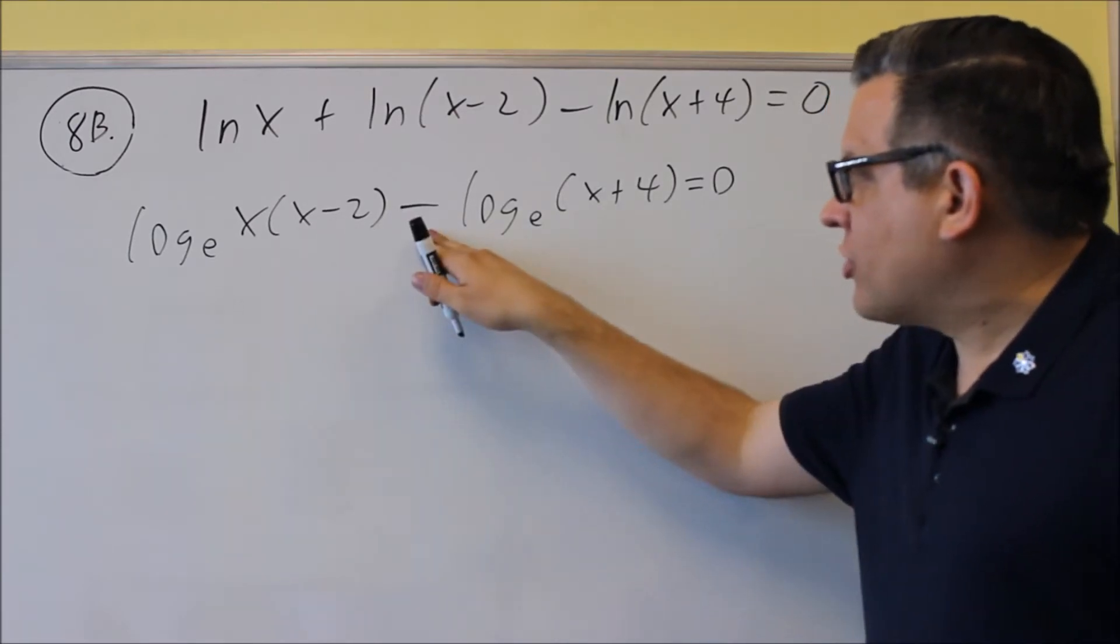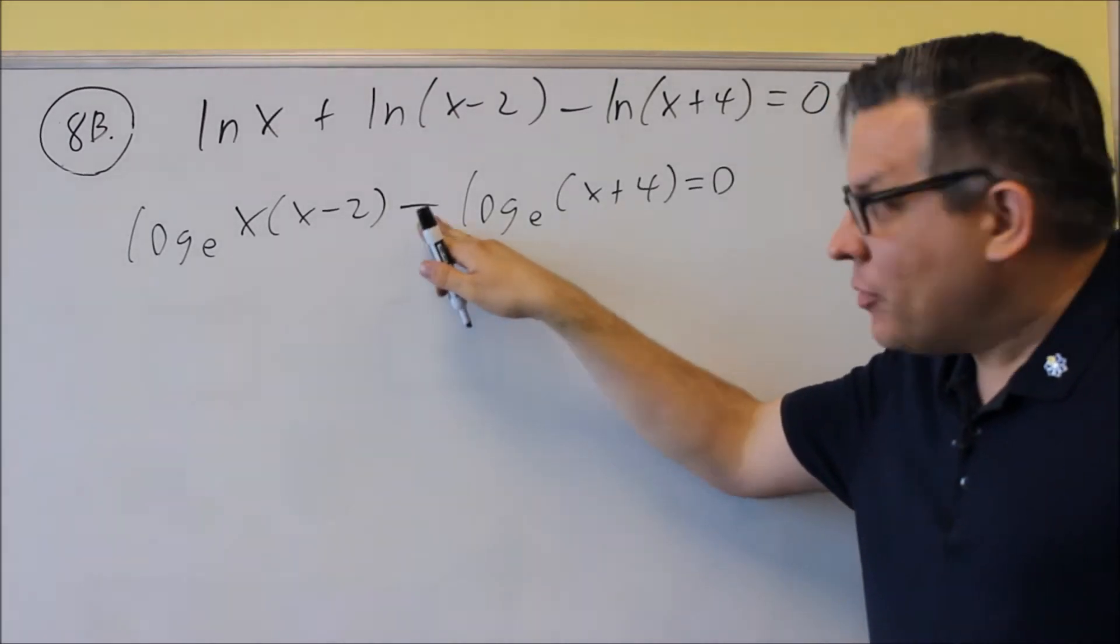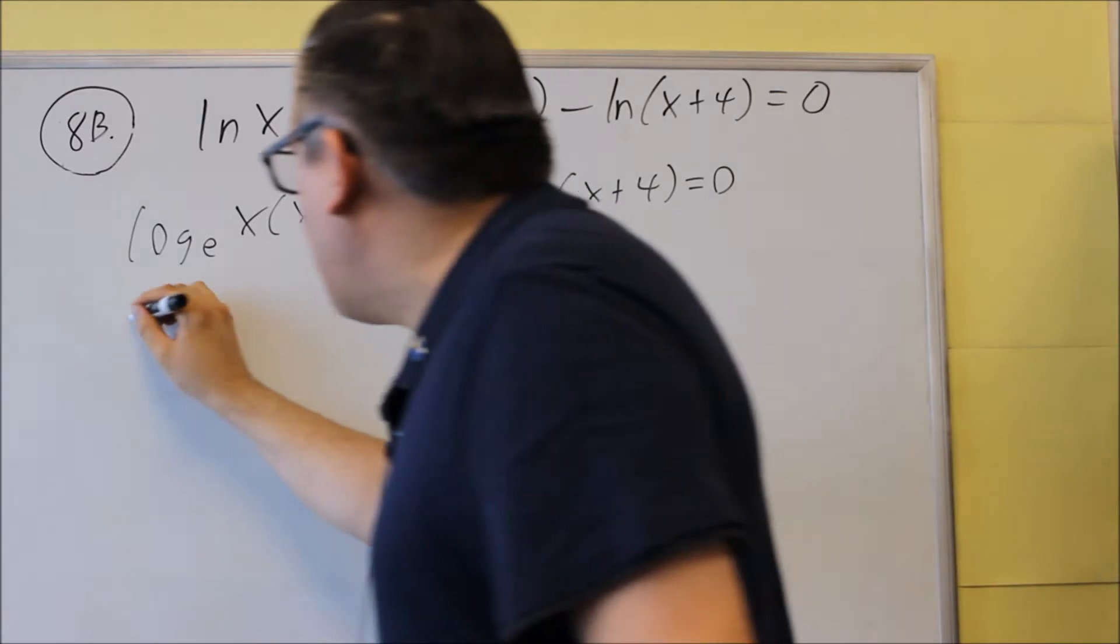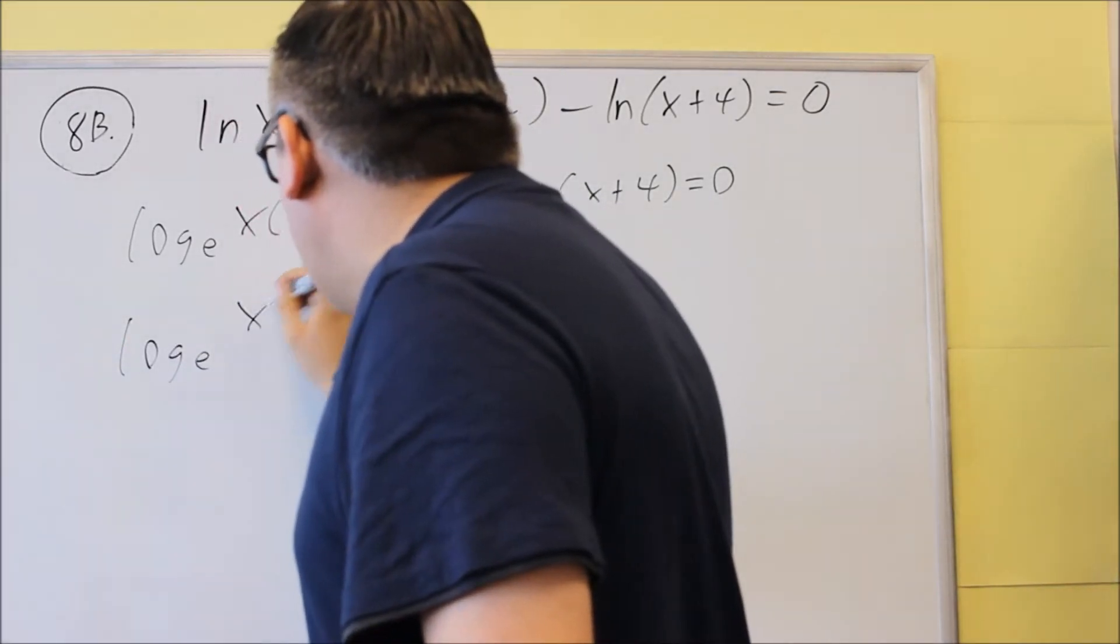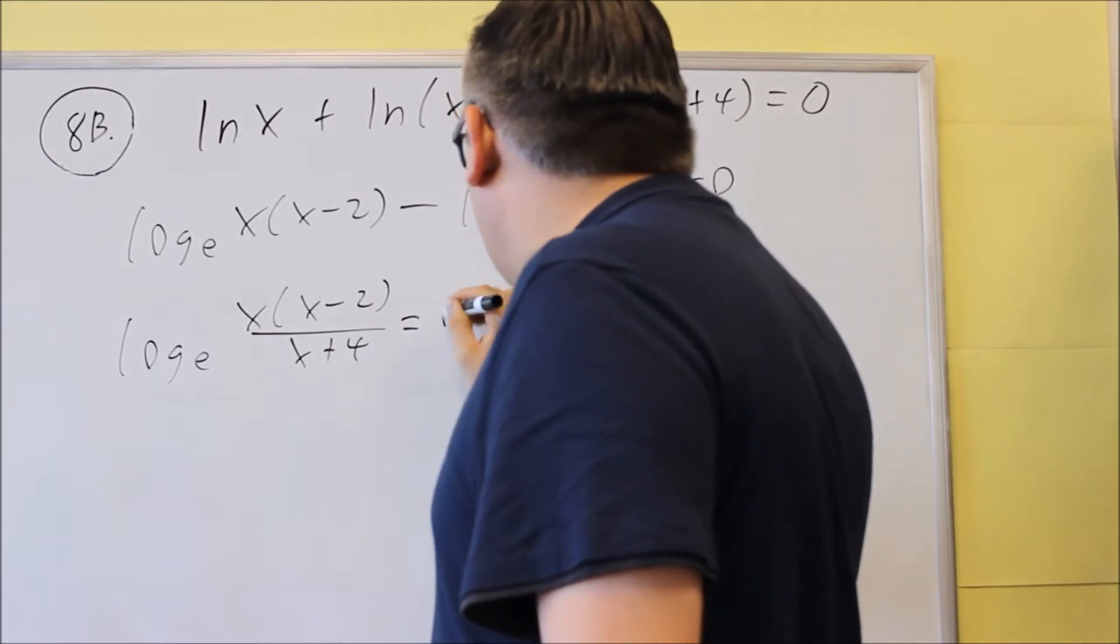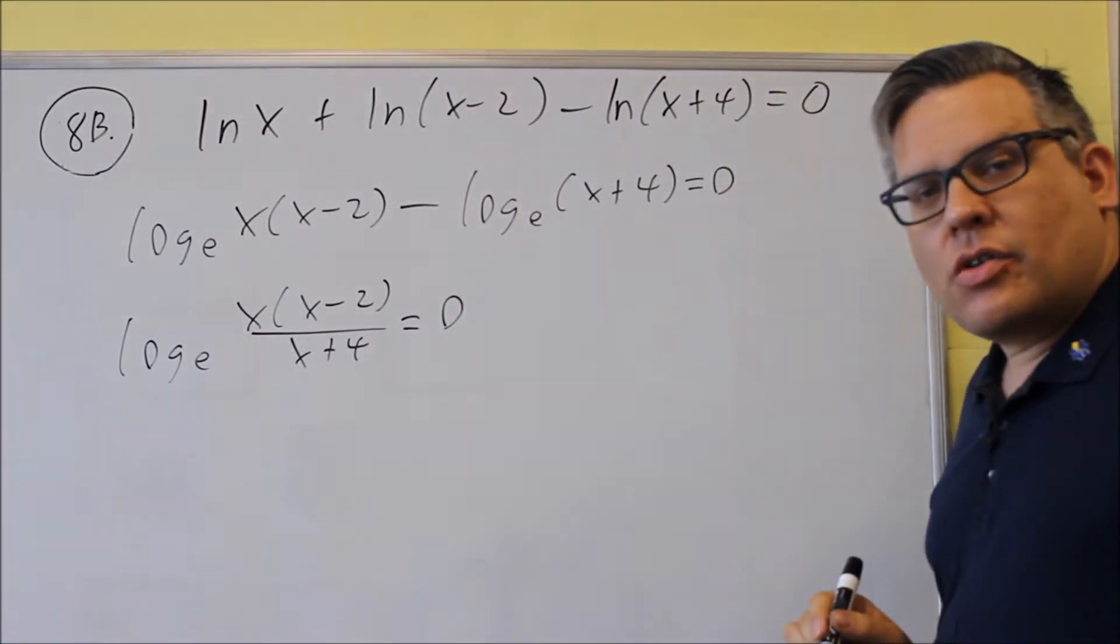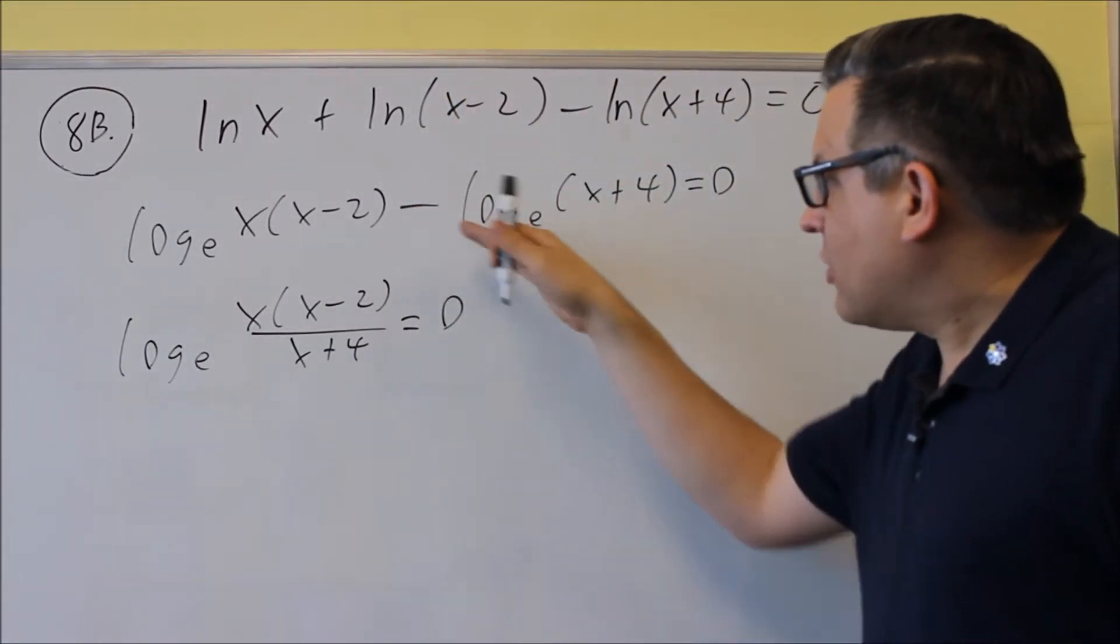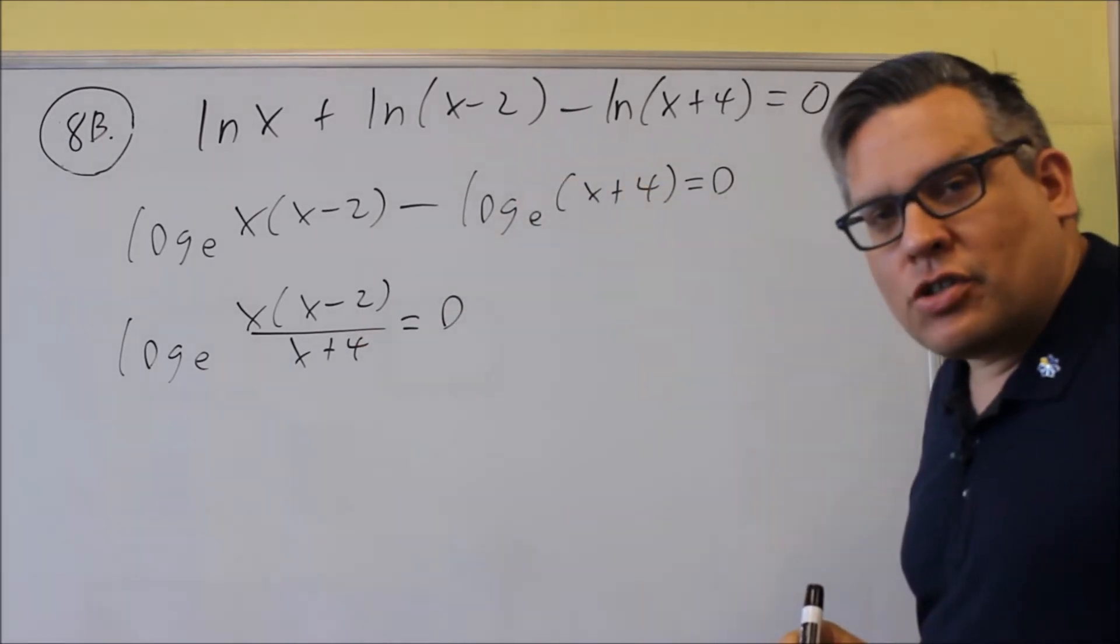Now we'll turn this into a division problem because you've got the minus there with your log properties. That's what happens. x times x minus 2 over x plus 4, and that's going to equal 0. So we combine that together. Negative turns into division.